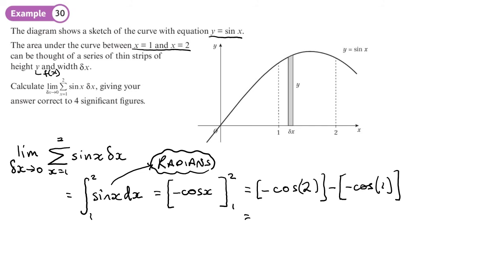And I get 0.95644, and we want the answer to four significant figures. So one, two, three, four. So that will be our answer for that one.